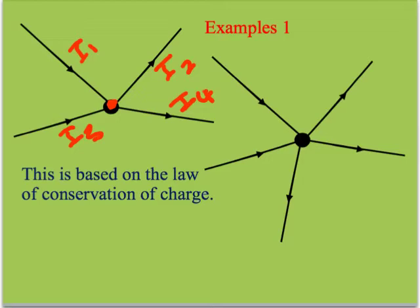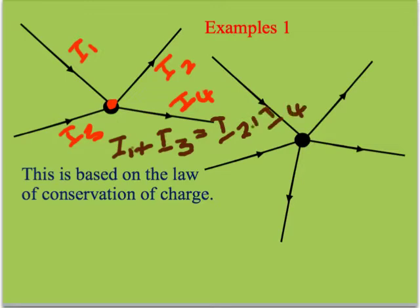Now all the currents going in, which is I1 and I3, must add together. So I1 plus I3 will be equal to everything leaving, which is going to be I2 and I4.